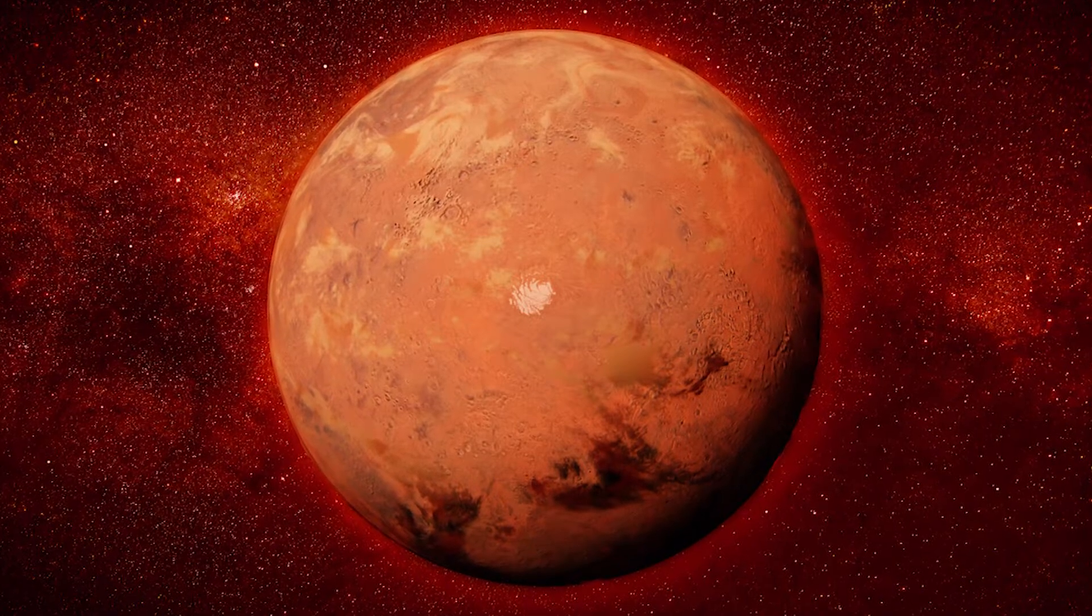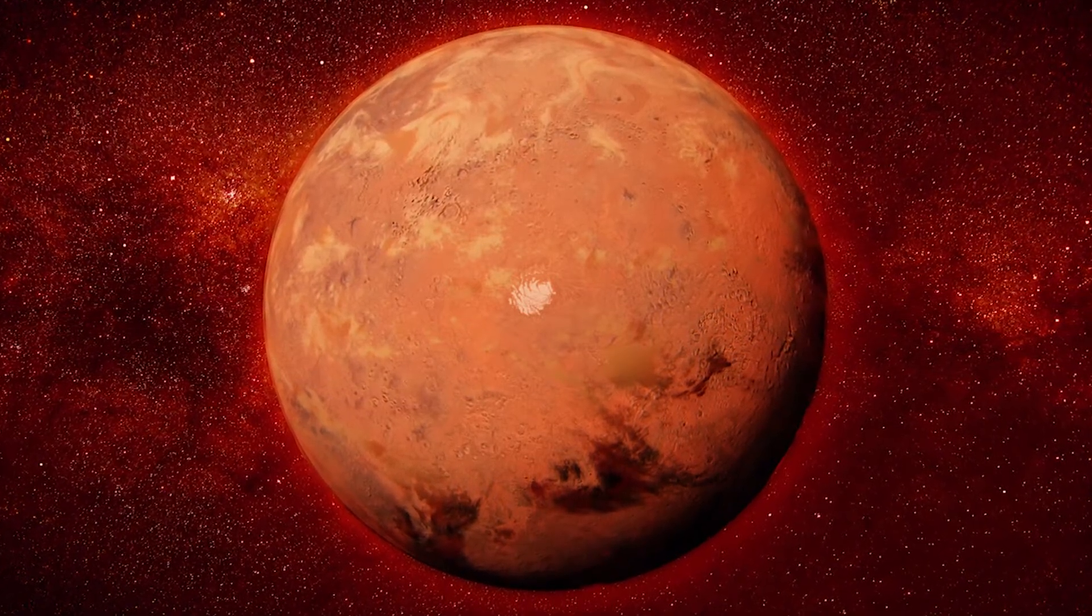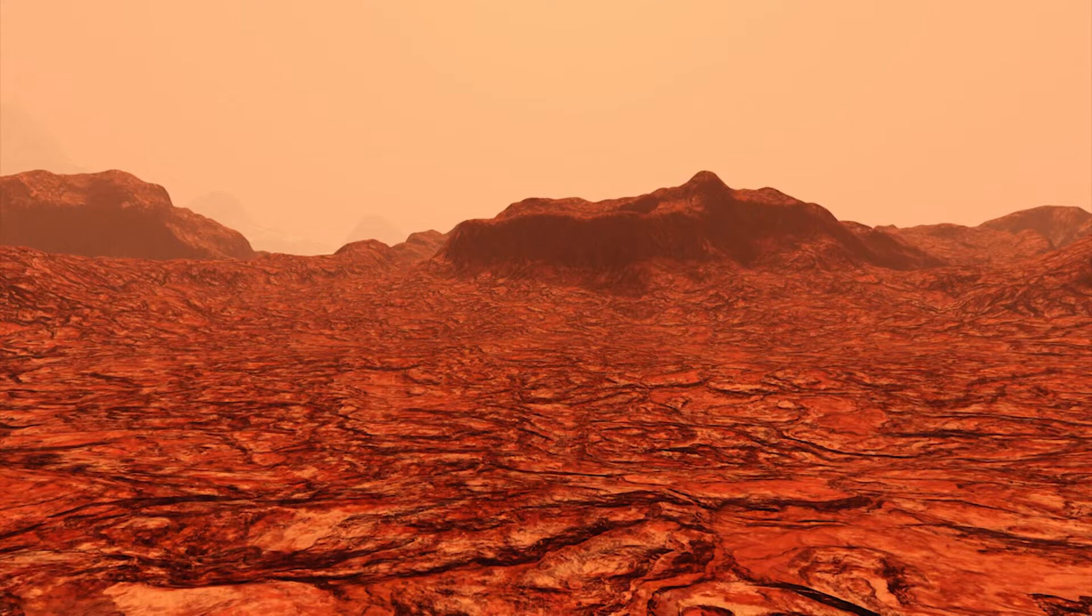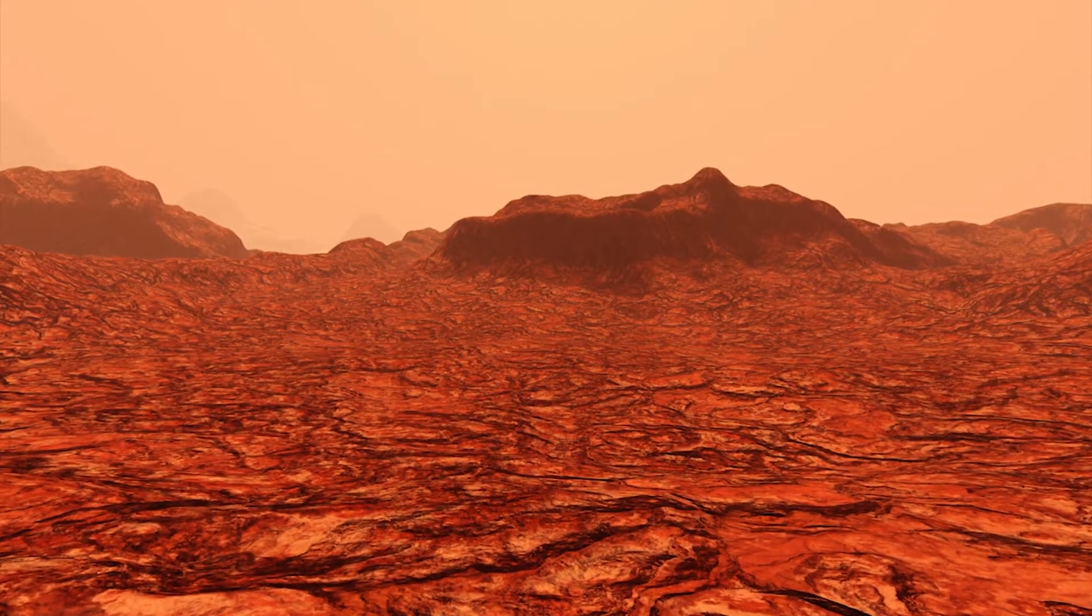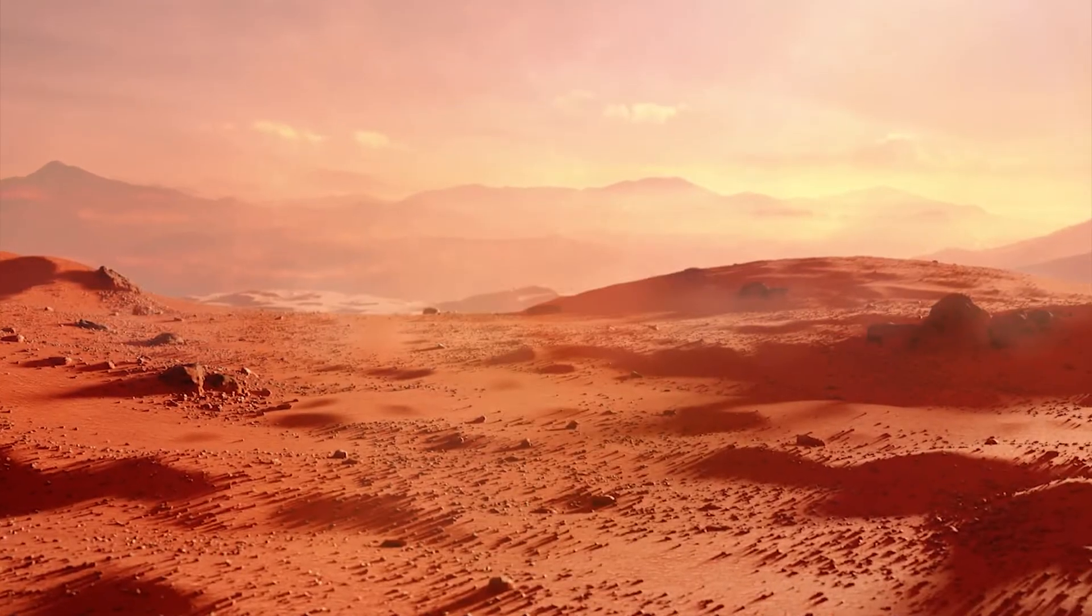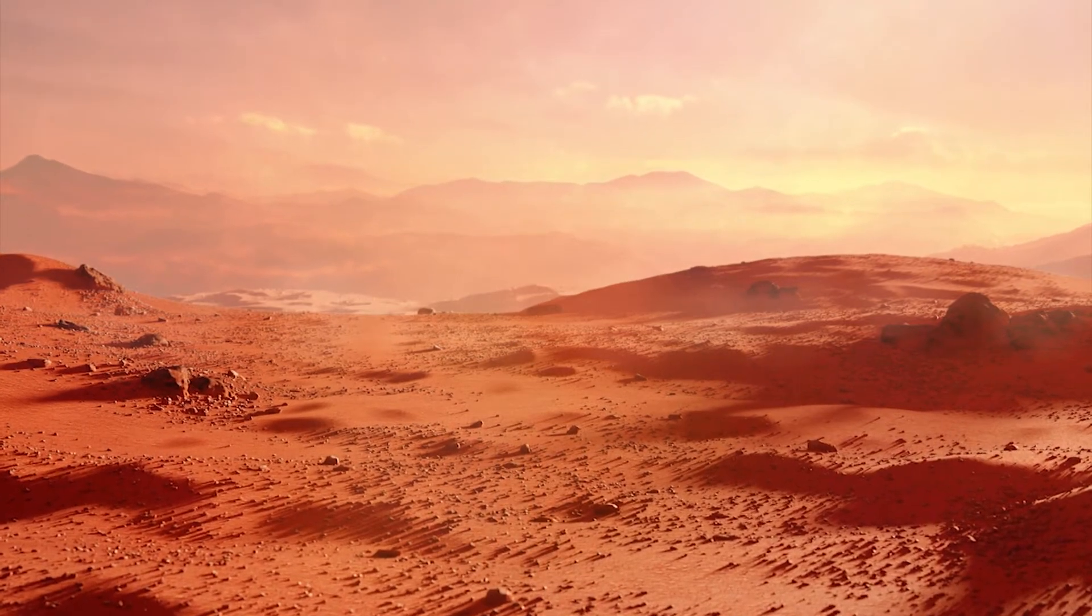A thin atmosphere means that Mars experiences huge temperature extremes. A summer afternoon near Mars's equator may get up to an idyllic 70 degrees. But a mid-winter night? Negative 220 degrees. Kind of makes our weather here this time of the year seem pretty tame, right?